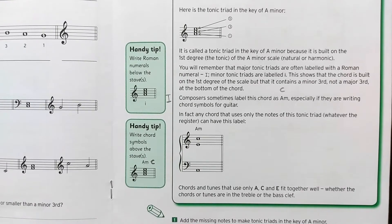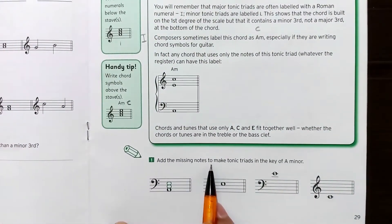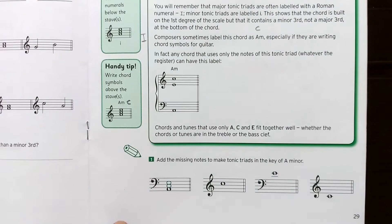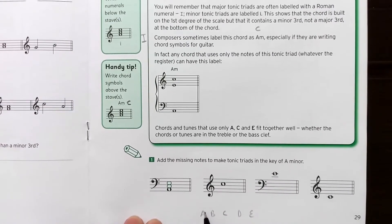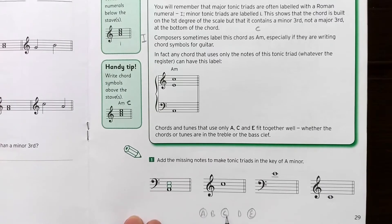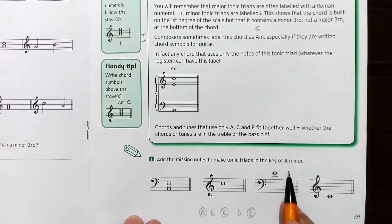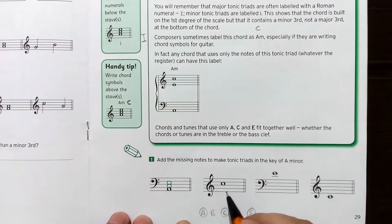Now let's start the first exercise. They are saying: add the missing notes to make a tonic triad in the key of A minor. To find the A minor chord, we need to know which notes are required. We need A, B, C, D, E — first to fifth — so we need A (the first degree), C (the third degree), and E (the fifth degree). These are the three notes needed to make a tonic triad in A minor.